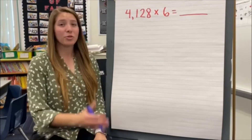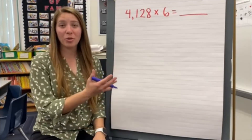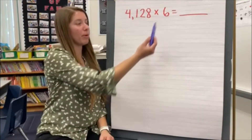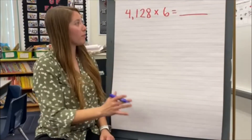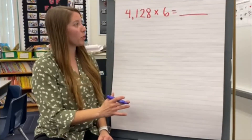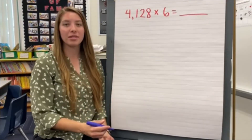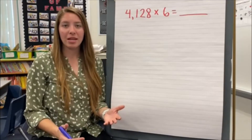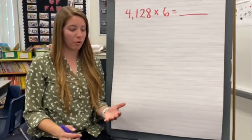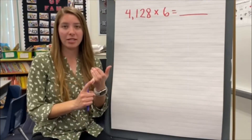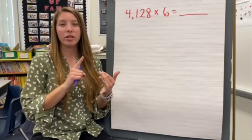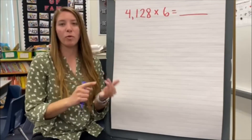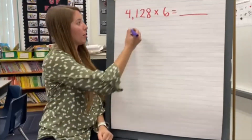Alright! So again, this strategy works with any number multiplied by a single-digit number. In this case, 4,128 times 6. I'm going to follow those same steps: first I'm going to decompose the number, then I'm going to multiply each piece, and then I'm going to add them back together.